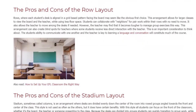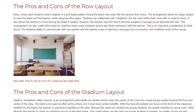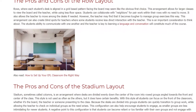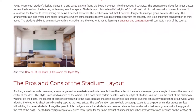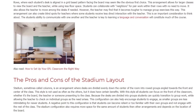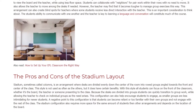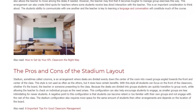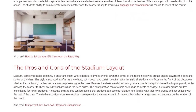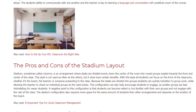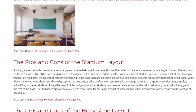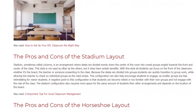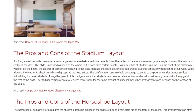The Pros and Cons of the Stadium Layout. Stadium, sometimes called Columns, is an arrangement where desks are divided evenly down the center of the room into row groups angled towards the front and center of the class. This style is not used as often as the others, but it does have certain benefits. With this style, all students can focus on the front of the classroom, whether it's the board, the teacher, or someone presenting. Because the desks are divided into groups, students can quickly transition to group work, while allowing the teacher to check on individual groups as needed.